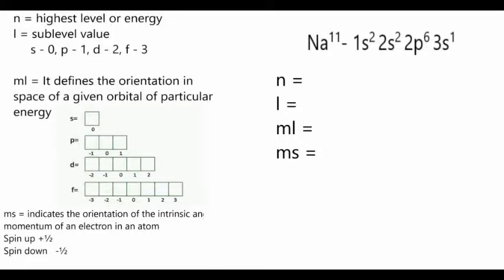The next lesson is about quantum numbers. A quantum number is a value that is used when describing the energy levels available to atoms and molecules. We have four quantum numbers. The first one is the principal quantum number, which has a symbol of n.